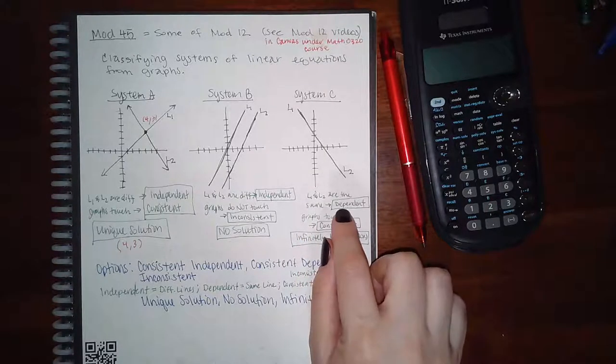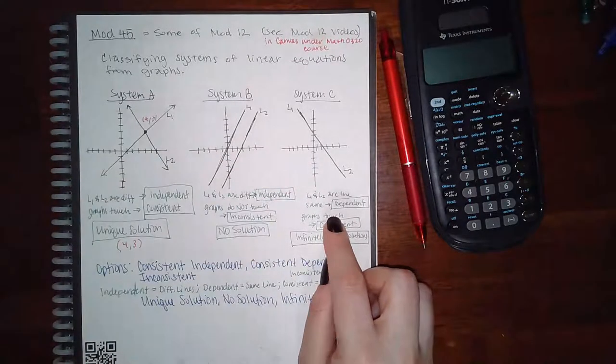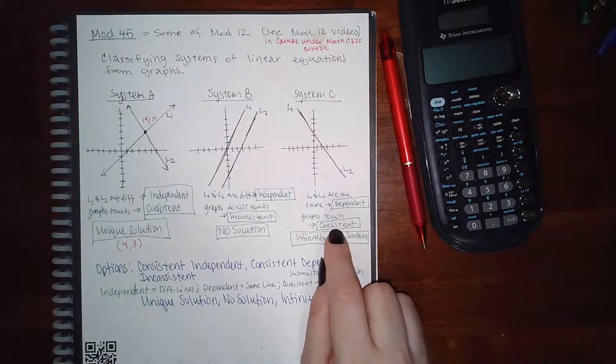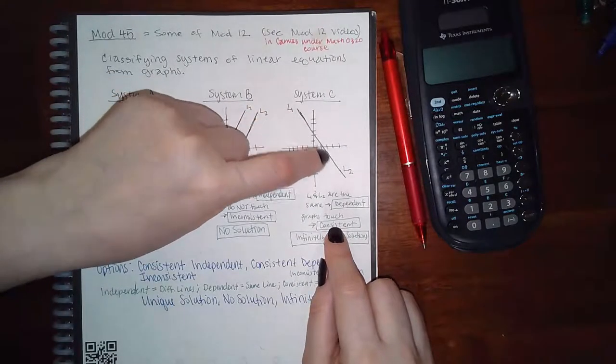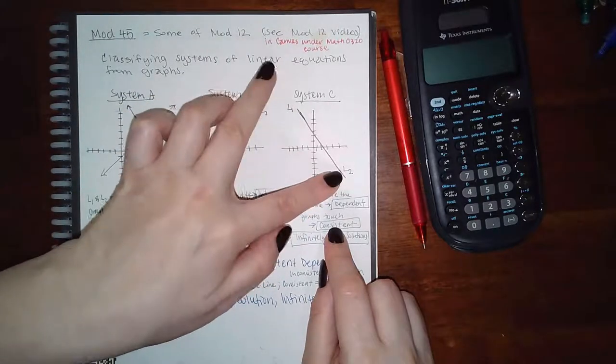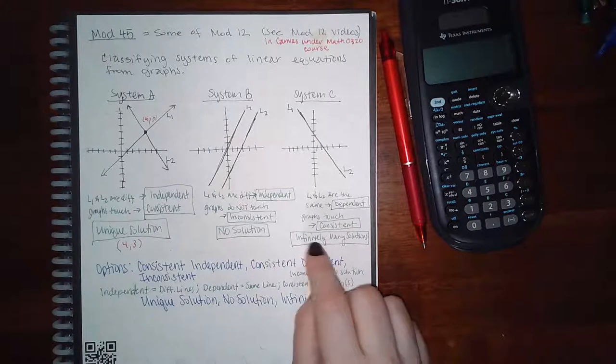In this case, L1 and L2 are the exact same line. They lie on top of one another, so they are what are called a dependent system. And the graphs touch—they just happen to touch everywhere along this line. So they are still consistent. But because they touch at every single point on this line and the line goes forever in this direction and forever in this direction, they do have infinitely many solutions.